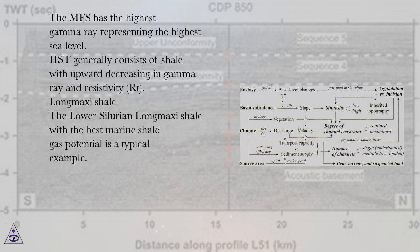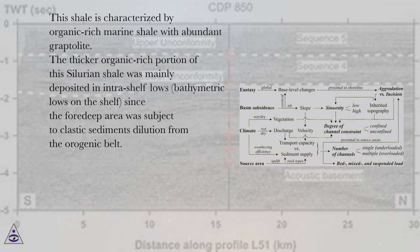Long Maxi shale. The lower Silurian Long Maxi shale with the best marine shale gas potential is a typical example. This shale is characterized by organic-rich marine shale with abundant graptolite. The thicker organic-rich portion of this Silurian shale was mainly deposited in intrashelf lows and bathymetric lows on the shelf, since the foredeep area was subject to clastic sediment dilution from the orogenic belt.